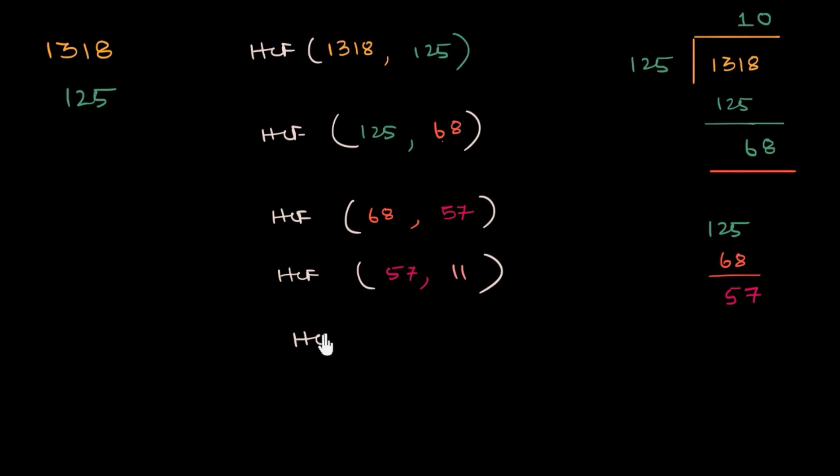So HCF of 57 and 11 will be the same as the smaller number and the remainder. And what's the remainder here? 11 will go 5 times till 55 and then there'll be 2 remaining. So let's use blue. 11 and 2.